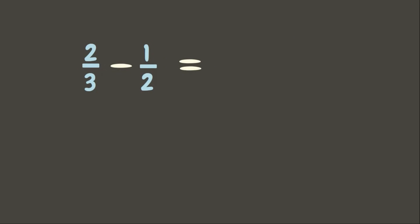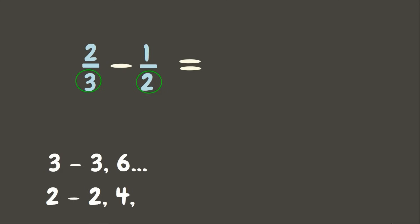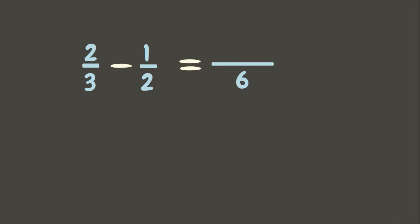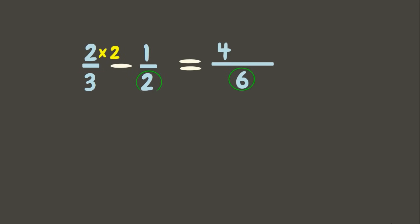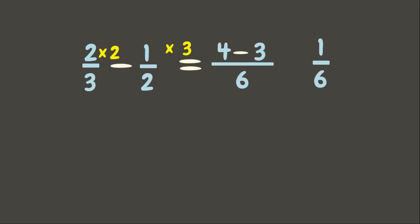Now let's try subtraction. The problem is two-thirds minus one-half. First step: get the LCD of three and two. Listing the multiples, their LCD is six. Get the equivalent fraction of two-thirds: six divided by three is two, times two is four. Get the equivalent fraction of one-half: six divided by two is three, times one is three. Now subtract the numerators: four minus three is one. Copy the denominator six — since this is the simplest form, our final answer is one-sixth.